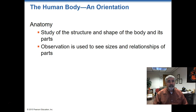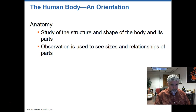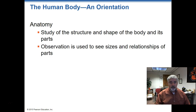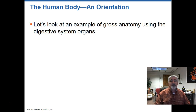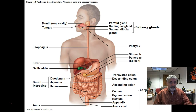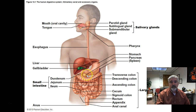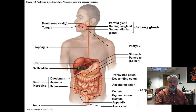Basically, we start off talking about what is anatomy. Anatomy is the study of the shape and structure of the body and all of its parts. We can use visual observation to see the sizes and relationships of different parts of the body. The things that are easily observable — the large structures we see as part of the body — are what we refer to as gross anatomy. For example, we can see the liver, the gallbladder, the stomach, the spleen, and the pancreas.